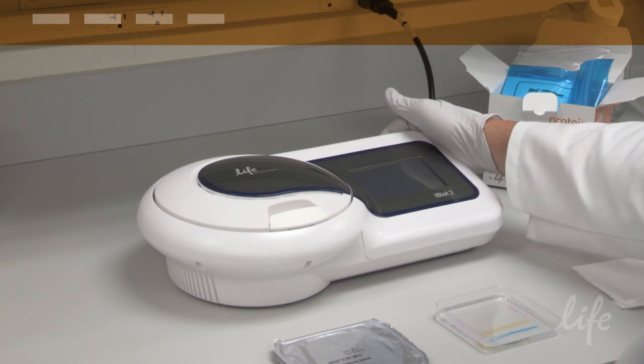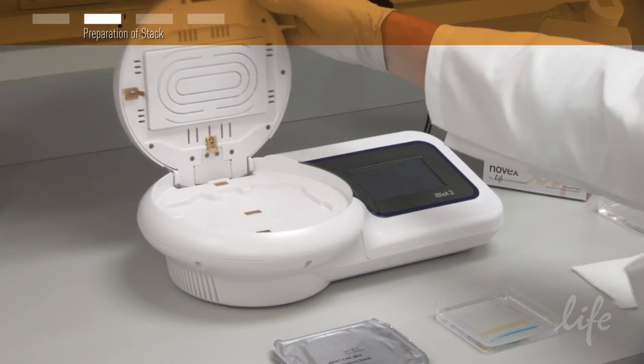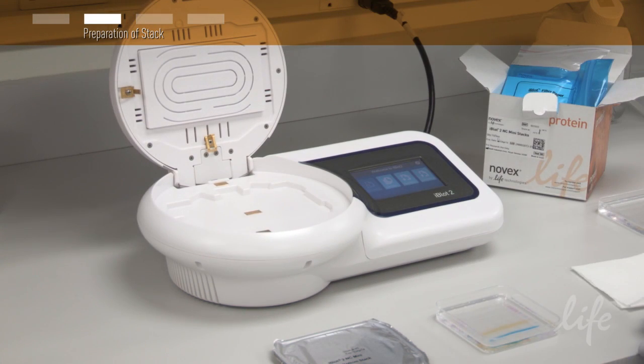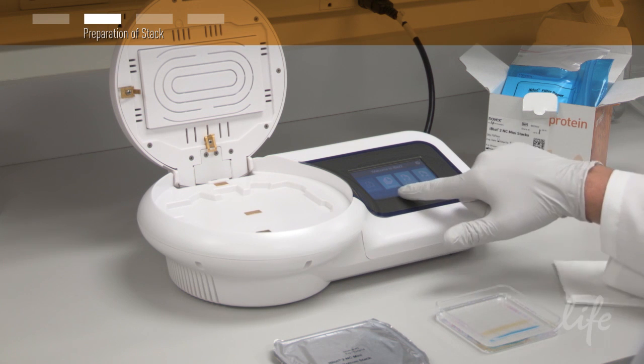To get started, power on the iBlot2 dry transfer device and open the lid. The digital display will show icons for the available actions.